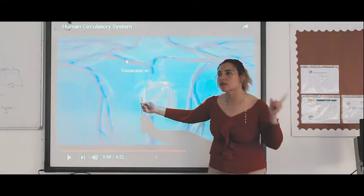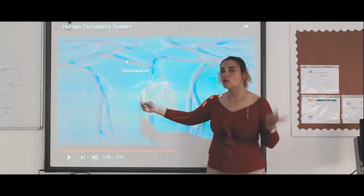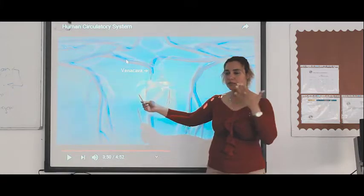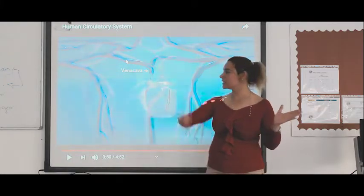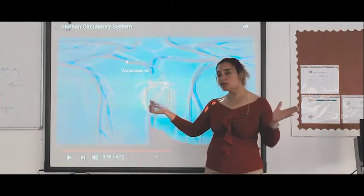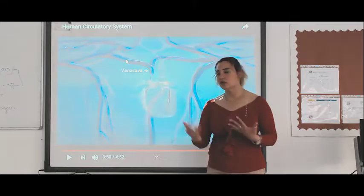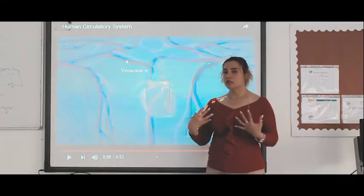What comes back to the right atrium? Deoxygenated blood. Why does it come back? Because it has been used by the body. So it needs to be sent again to the lungs — to be cleaned, nourished, oxygenated, and get nutrients again.